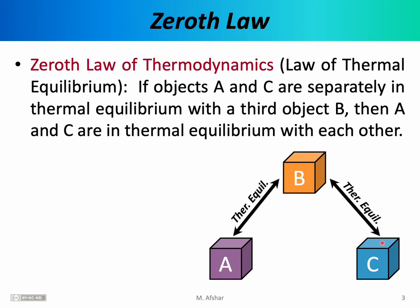The point is that if objects A and B are in thermal equilibrium — if these two are brought into physical contact and we notice that they do not exchange energy — and furthermore B and C are separately in thermal equilibrium, so when those two objects are brought into physical contact they also do not exchange energy, then we are guaranteed that when A and C are brought into physical contact, they too will not exchange energy. They will be in thermal equilibrium.